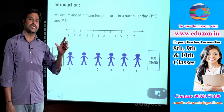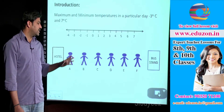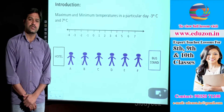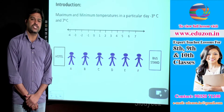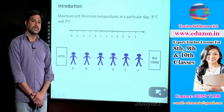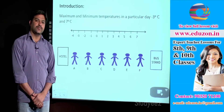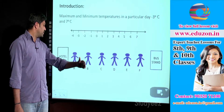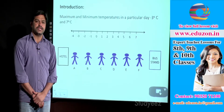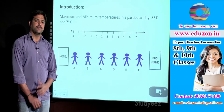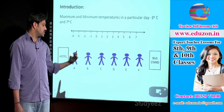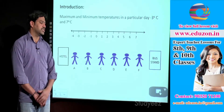Can you locate the position of person D with respect to the hotel? Counting: 1, 2, 3, 4. So person D's position from the hotel is the 4th position. With reference to the hotel, person D's position is 4th.